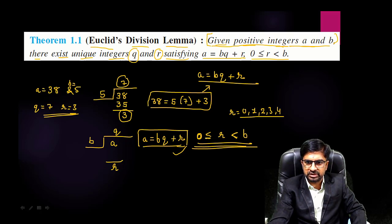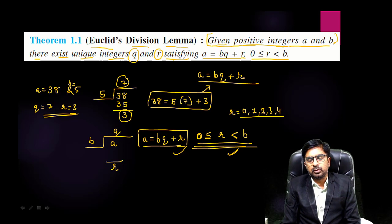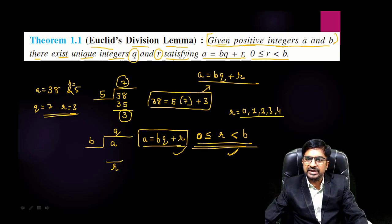Generally, sometimes in MCQs they will ask you this, but students forget to see this sign 0. So 0 is there, 0 is equal to or less than r when r is less than b. So this way you can understand Euclid's division lemma, guys.